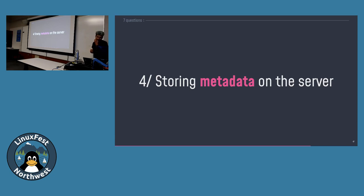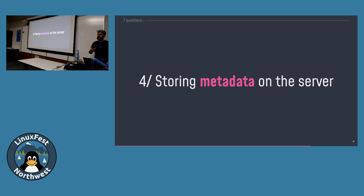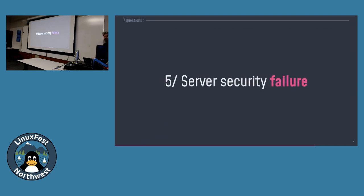What about the metadata stored on the server? Storing different blobs of data on the server means you will store some pieces of information like which service wants to access which client's data. Depending on your service, it can be problematic or not. In my opinion this is just some kind of metadata, not that important, and you can even encrypt it on the server - so it's a minor risk. What about server security failures? If your data on the server is compromised, it's encrypted using unique keys for each blob of data, so what's lost can't be recovered - not a big deal.